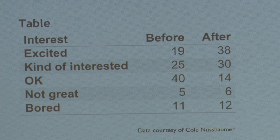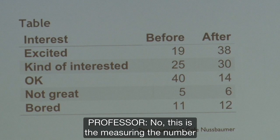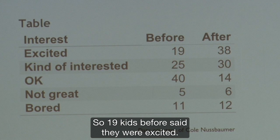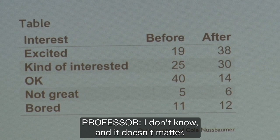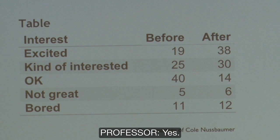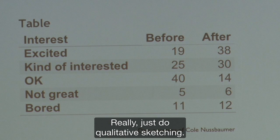A clarification question: this is measuring the number of kids that answered each category. So 19 kids said they were excited before, 25 kids said they were kind of interested, and so on. You can assume the total number of kids is the same for both before and after. Don't worry about exact data — just do qualitative sketching. It should show all of the categories.